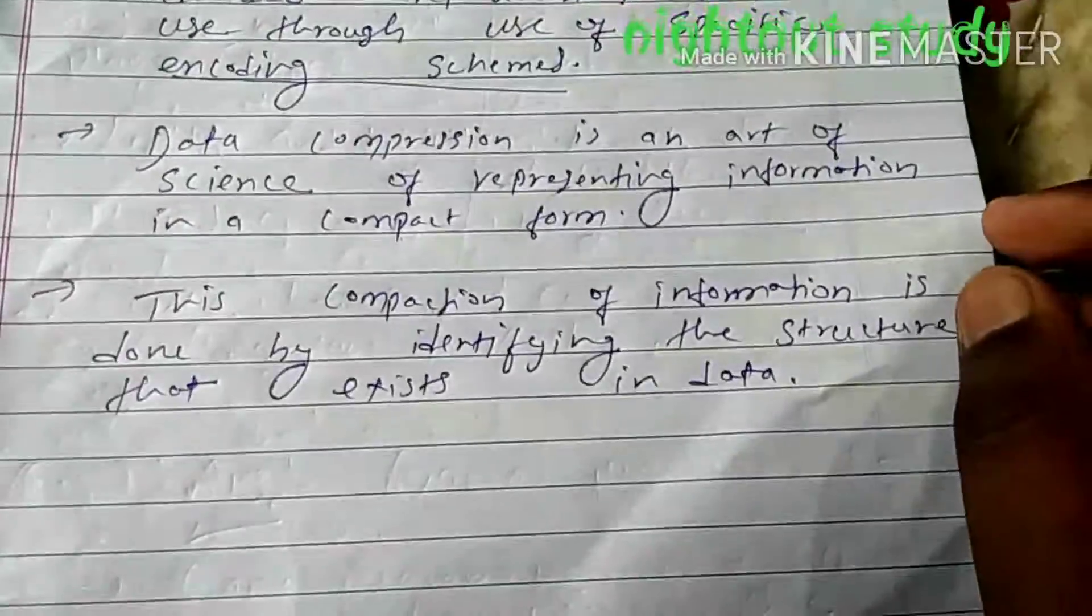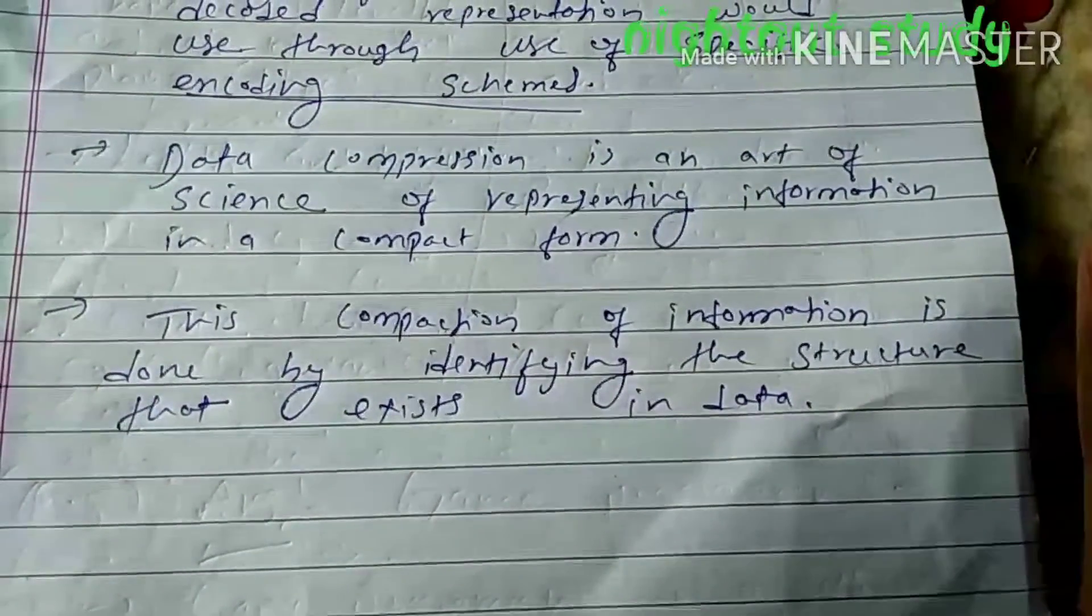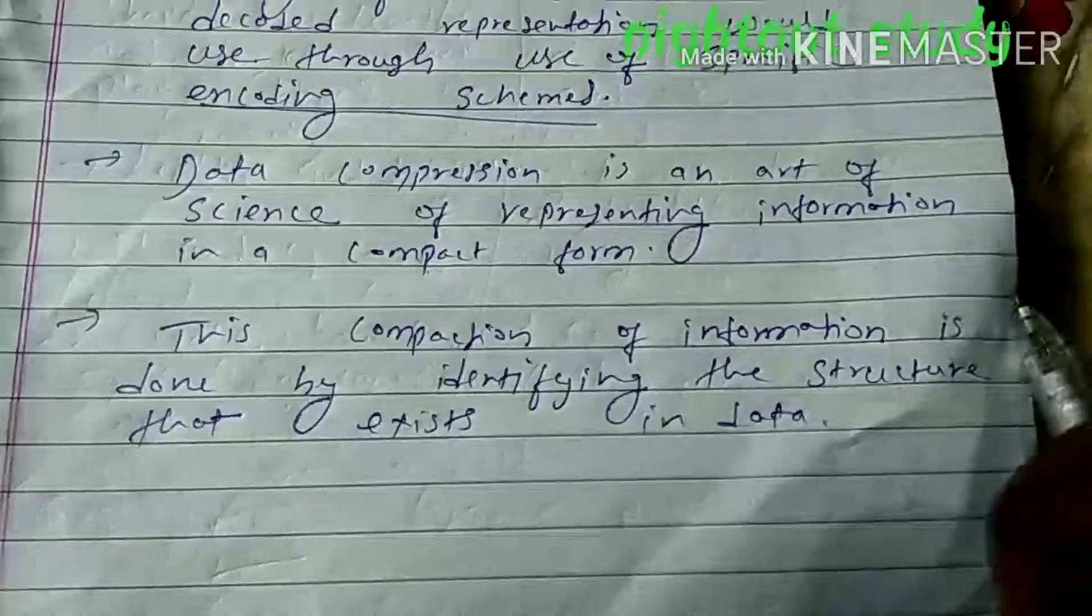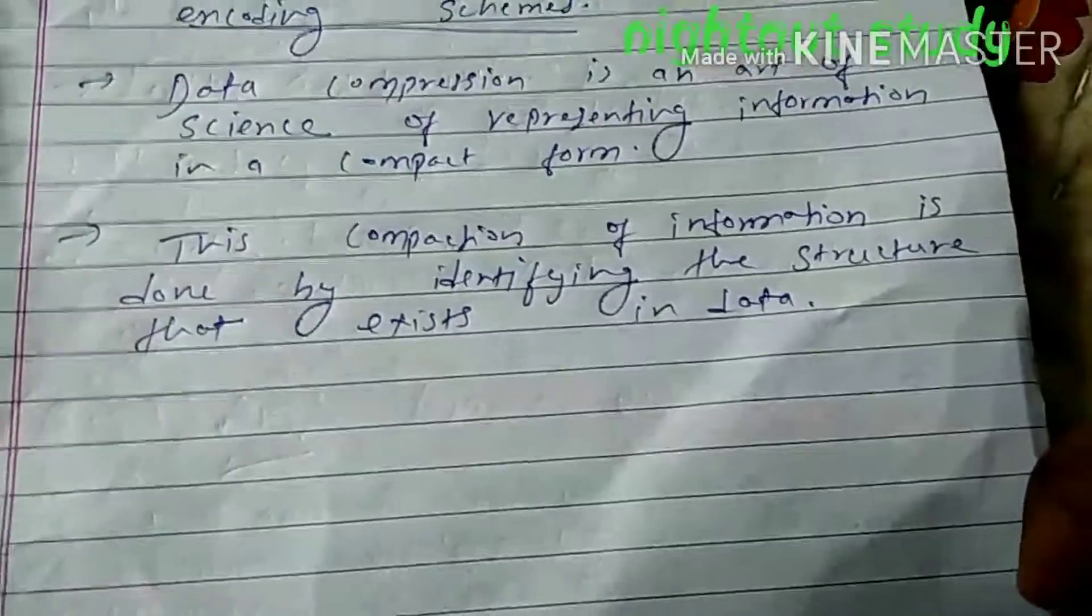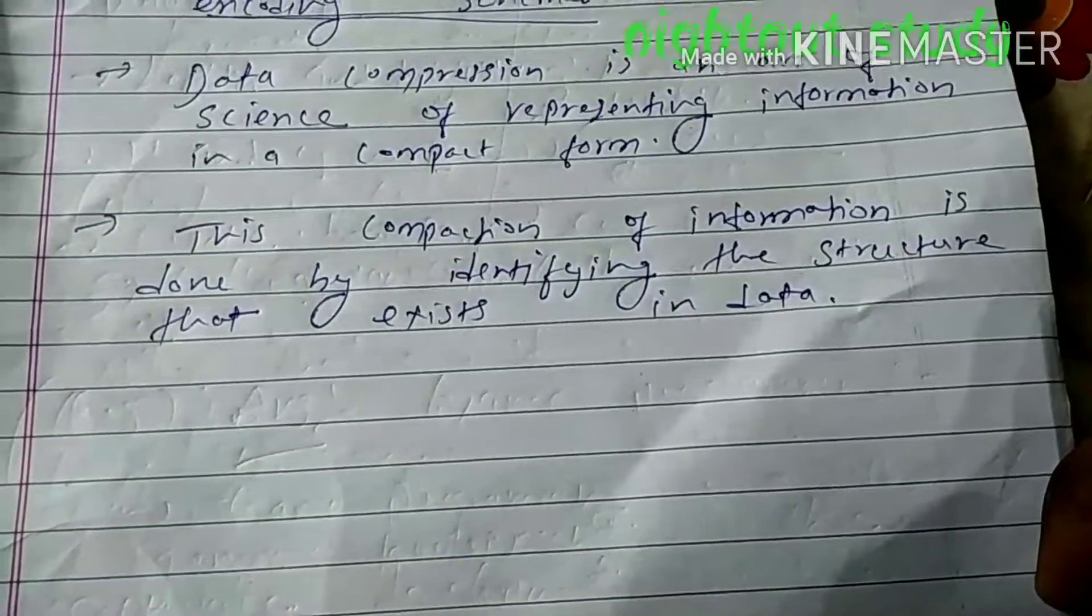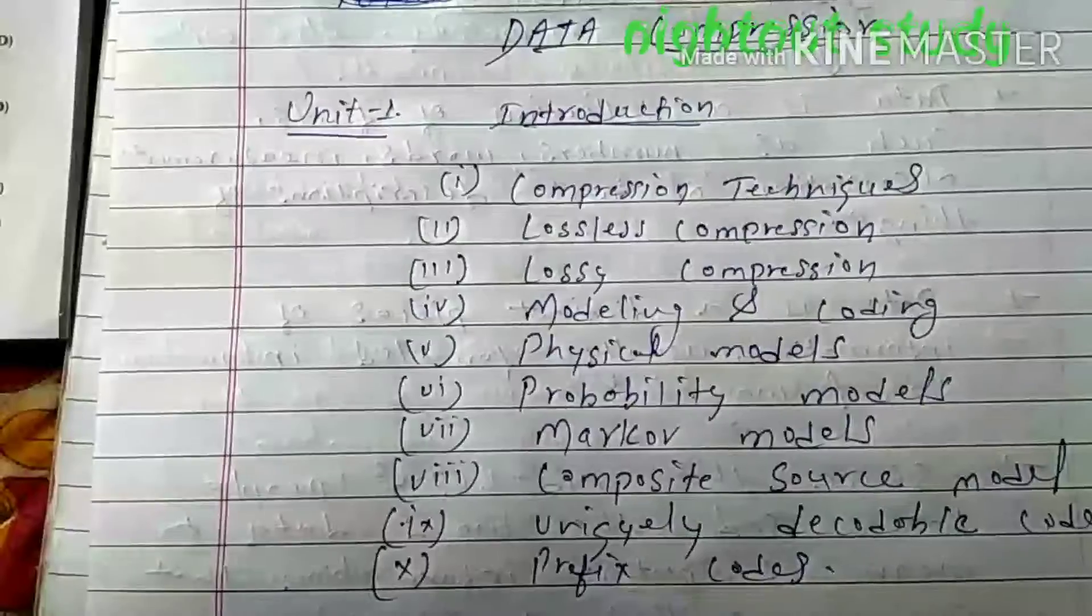Data compression is an art of science of representing information in a compact form. This compaction of information is done by identifying the structure that exists in data.